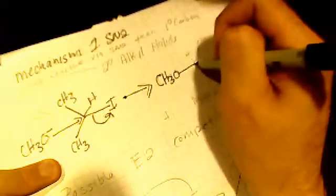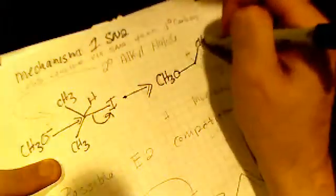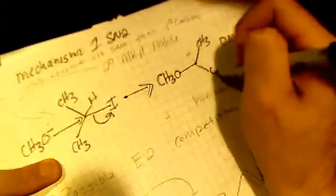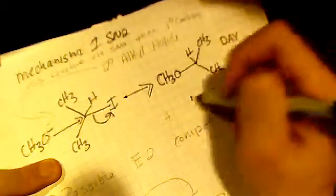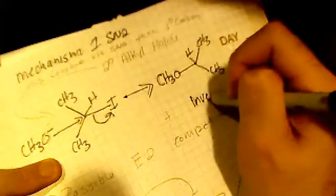The methoxide ion comes in from the back and then it pushes off the iodine ion. And we get isopropyl methoxide. There's inversion of configuration, right? So there's inversion when that happens.